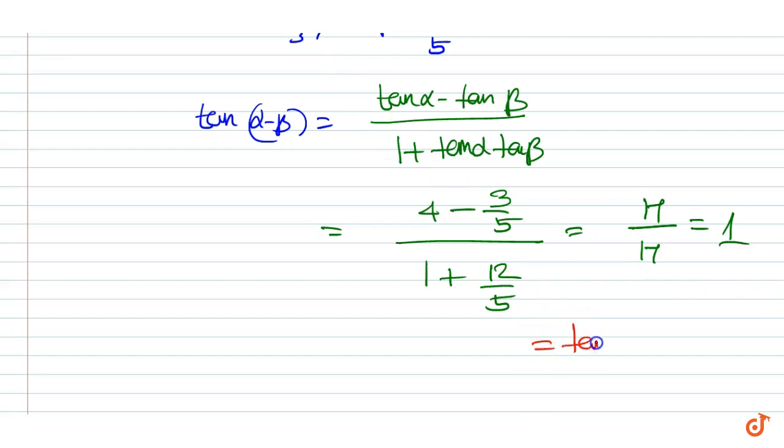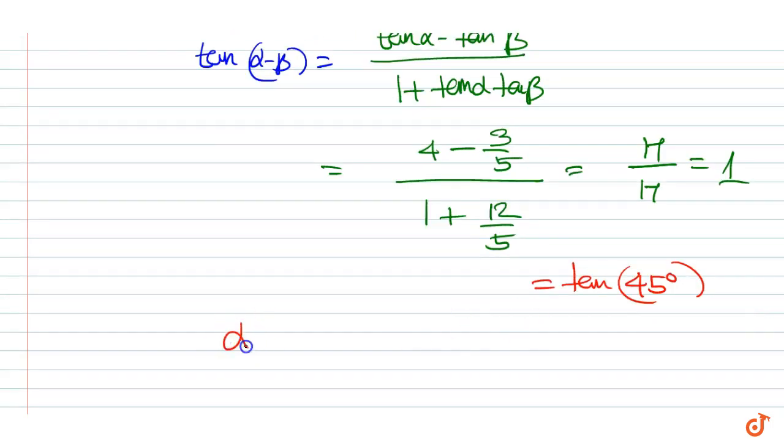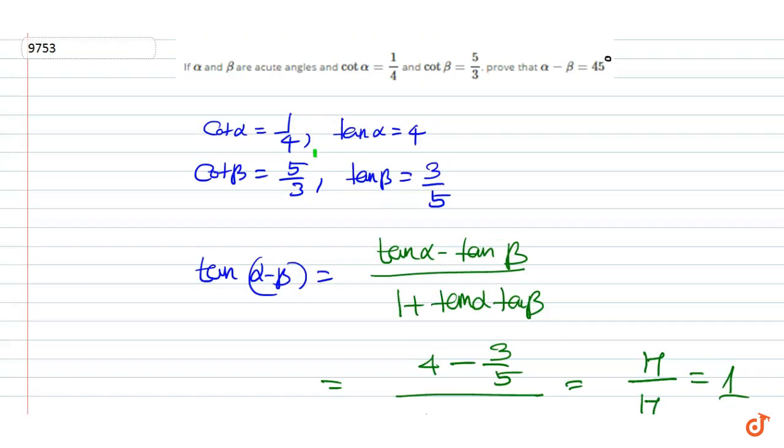This is equal to tan 45 degrees. Therefore, we have α - β equals 45 degrees, since α < 90° and β < 90°. That is our proof.